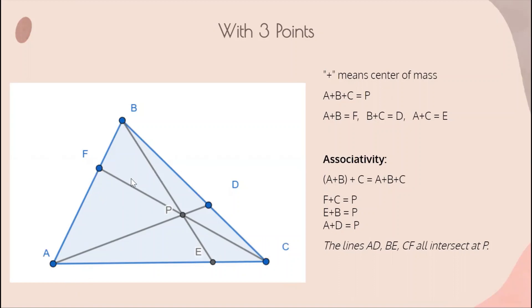So the center of mass of F and C is P, of B and E is P, and of A and D is P. Remembering that the center of mass of 2 points lies on the line between them, we see that AD, BE, and CF all intersect at P. And you may have seen this before as concurrent cevians.